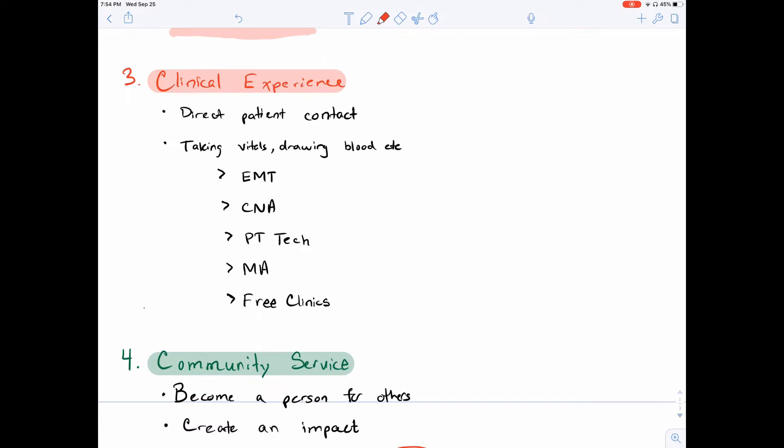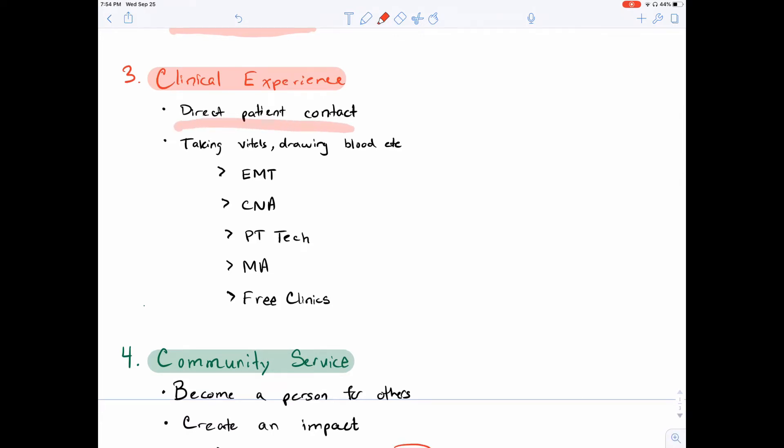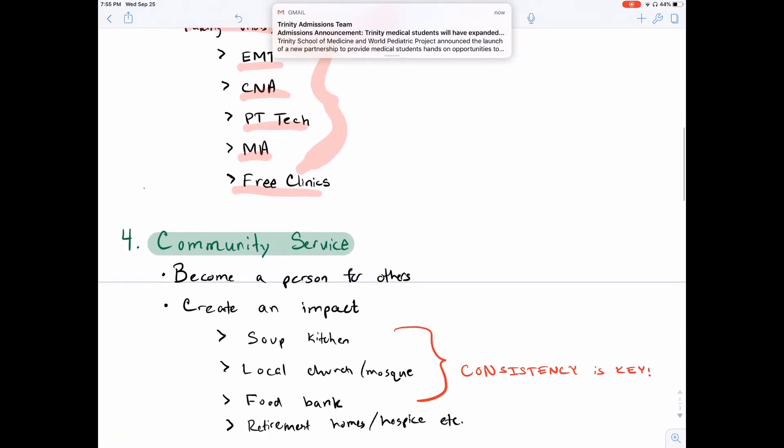So one thing that I want to emphasize is direct patient contact. What do I mean by that? Taking patients' vitals, drawing their blood, getting their history, really getting in contact with the patient face-to-face. Now, again, shadowing is there. Shadowing is very important, but it doesn't compare to actual direct patient contact. So one of the ways that you can get direct patient contact is through working as an EMT, certified nurse assistant, a physical therapy tech, medical assistant, and free clinics. I personally, throughout my undergraduate career, volunteered at a free clinic in my community about every Saturday, one Saturday per month for four years. And I think free clinic is probably one of the easiest ways because, unlike all these things right here, for free clinics, you don't necessarily have to have a certification. You can just go ahead and volunteer and they'll let you do all these things.